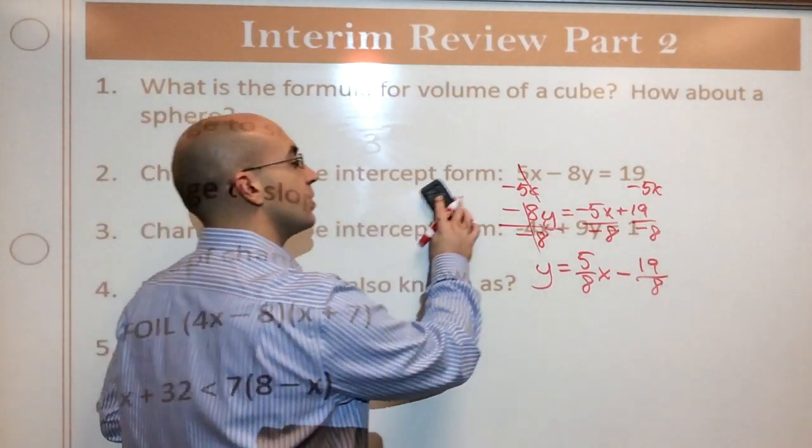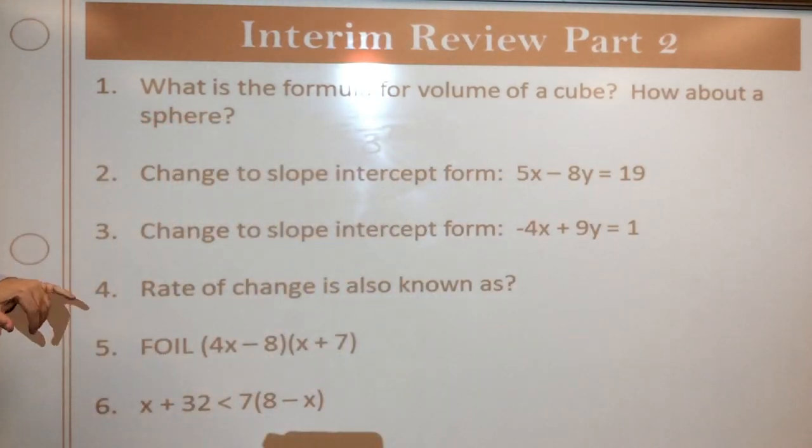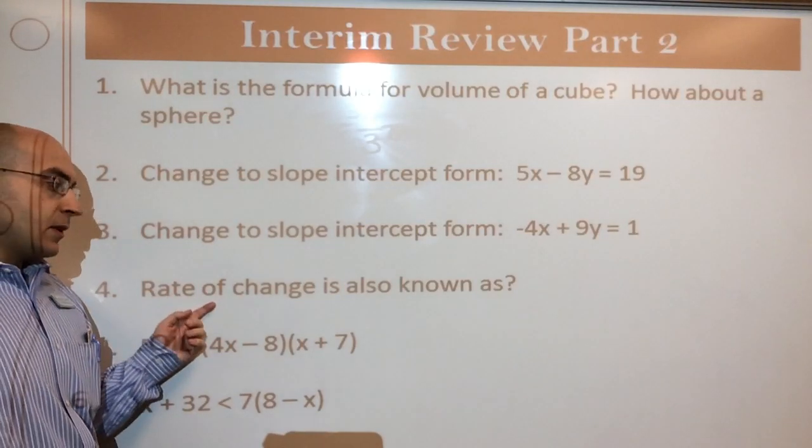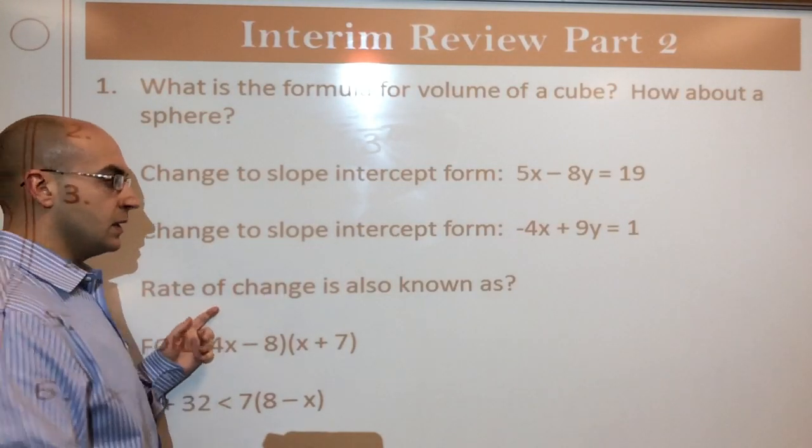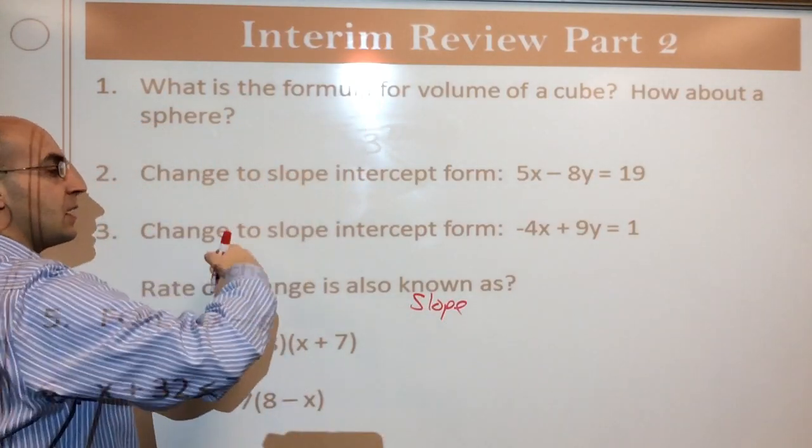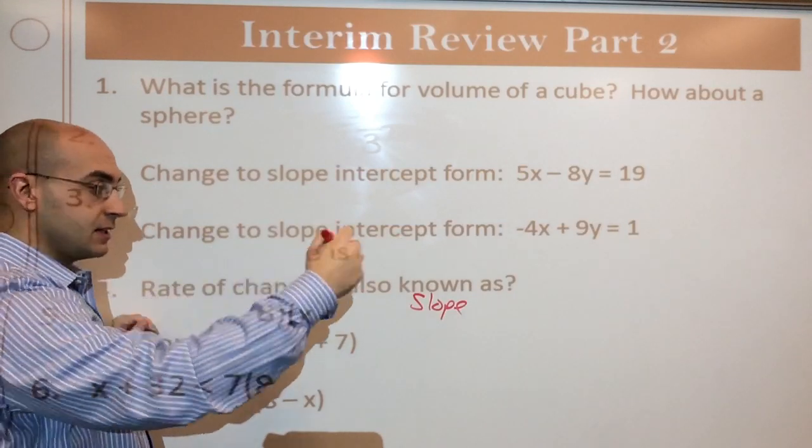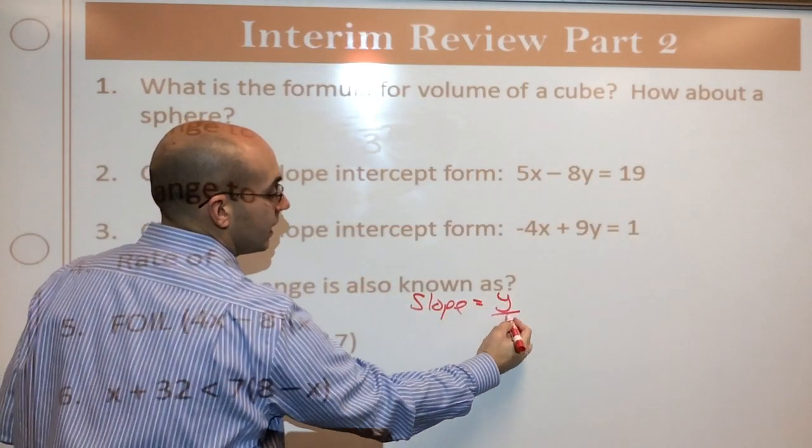I'm going to skip number 3. Hopefully you can pause me and get that done. I'll give you the answer in a minute. Rate of change is also known as, we did this yesterday in the review. So a rate of change is also known as slope. Okay? So when we talk about slope, it's how the line changes in y and changes in x, right? That's why slope is also known as y over x.